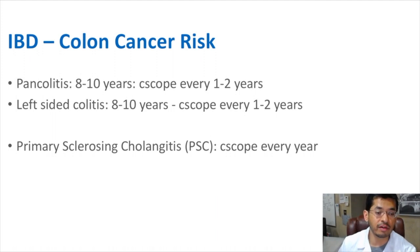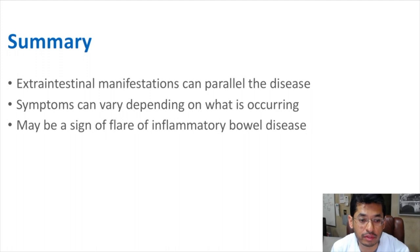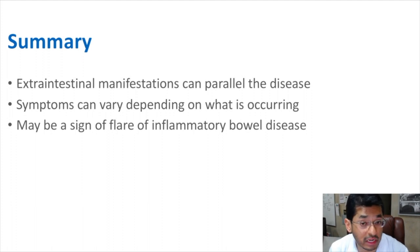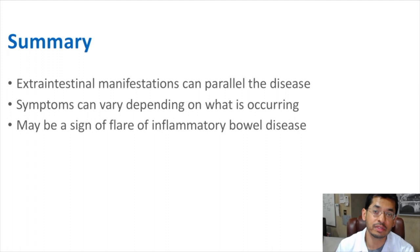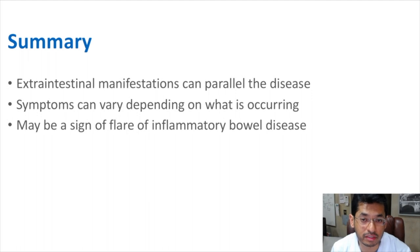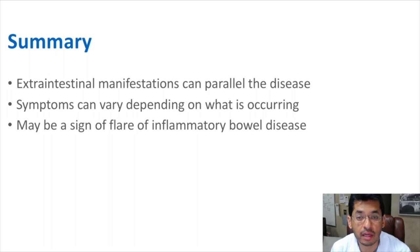In summary, we have extra intestinal manifestations that can parallel the disease and ones that don't. The symptoms can vary depending on what's occurring and whether you're having a flare. If you have an extra intestinal manifestation that parallels the disease and it is occurring or becoming more frequent, this may be a sign of an impending worsening flare of your inflammatory bowel disease. Many patients use these as a sign of when they may need further therapy for their disease process.